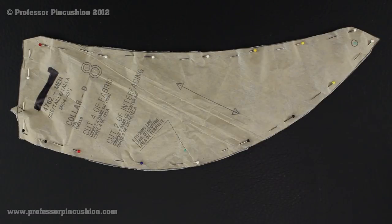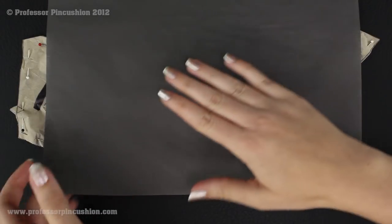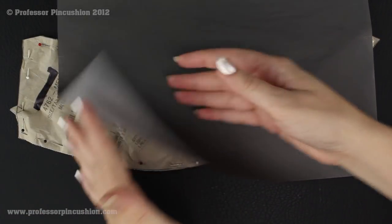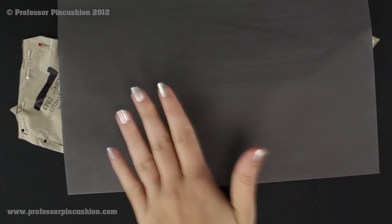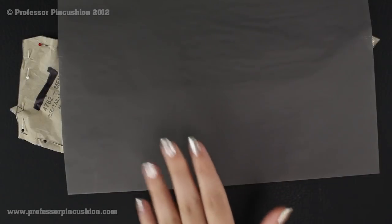So here I have some transfer paper. And you can get this at the fabric store and also at an art supply store. And if you look on one side it'll be white and then the other side will be dark. So this is the ink that's going to be transferred to your fabric.